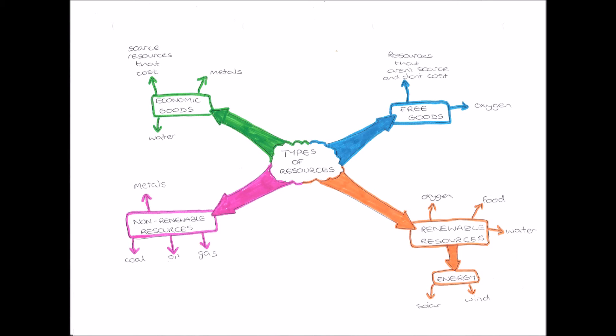Oxygen, for example. We breathe in, we breathe out carbon dioxide. That carbon dioxide is taken in by plants, and then plants emit oxygen. Therefore, it's renewable. It renews itself over time. The same with food. We grow food and then we use the seeds from the food to grow more food, so it renews itself.